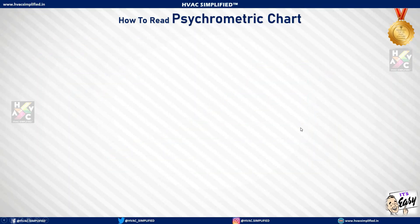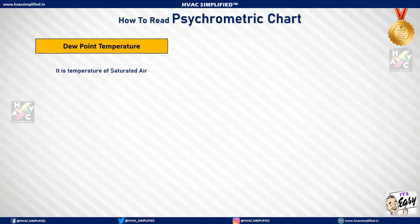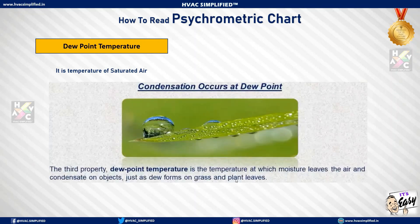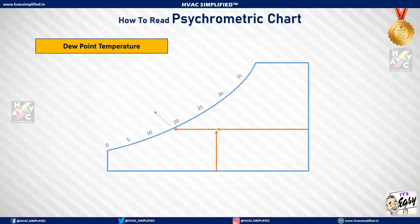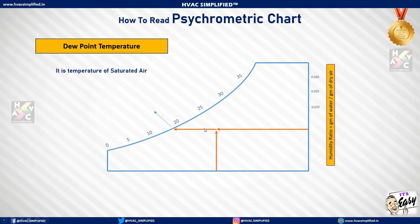Dew point temperature is the temperature of saturated air — the temperature at which moisture leaves the air and condenses on objects, just as dew forms on grass or plant leaves. It represents the maximum amount of water vapor that air can hold at a given temperature. On the psychrometric chart, dew point temperature is read on the left-hand side, where the dry bulb and wet bulb temperatures become the same.